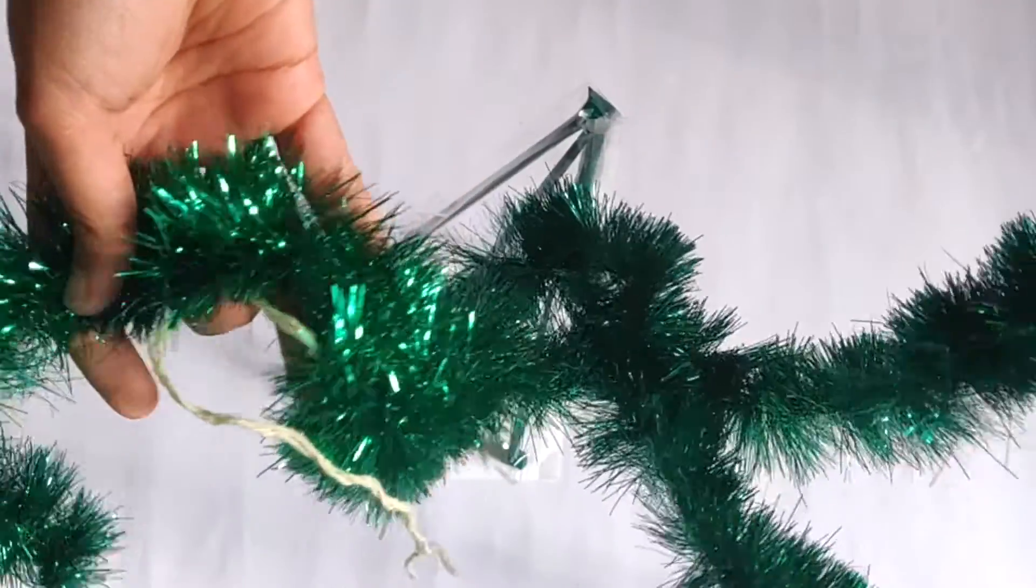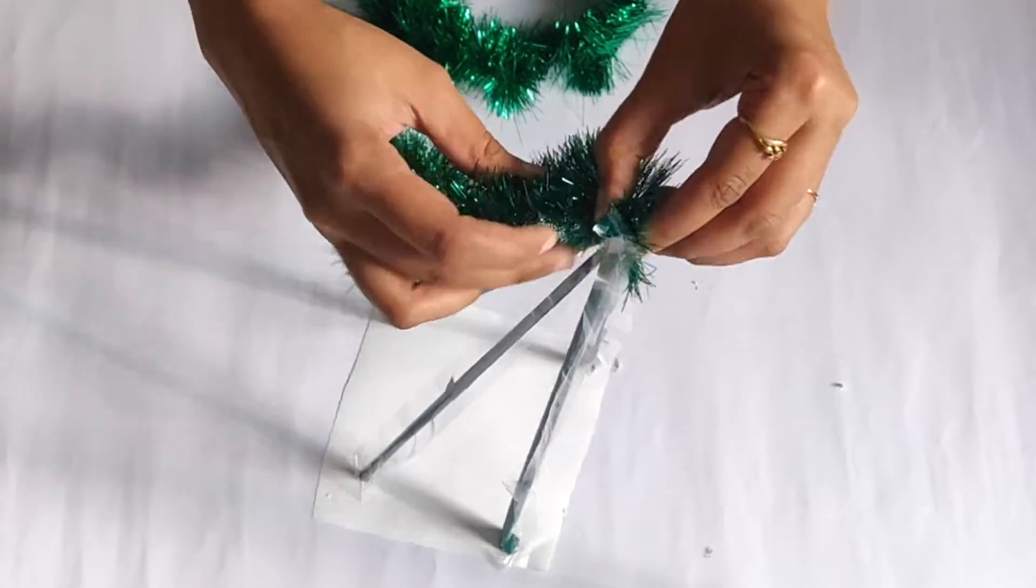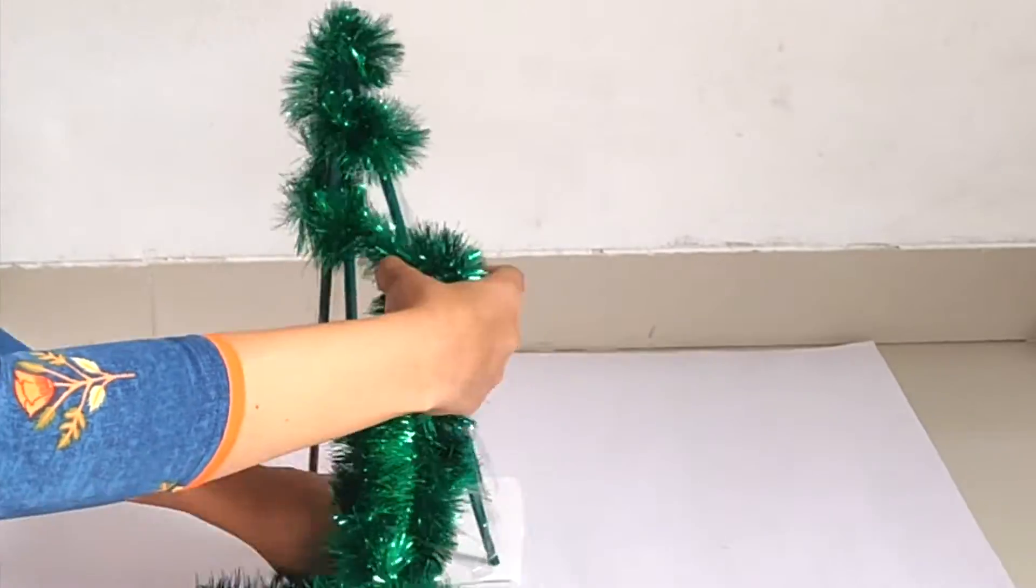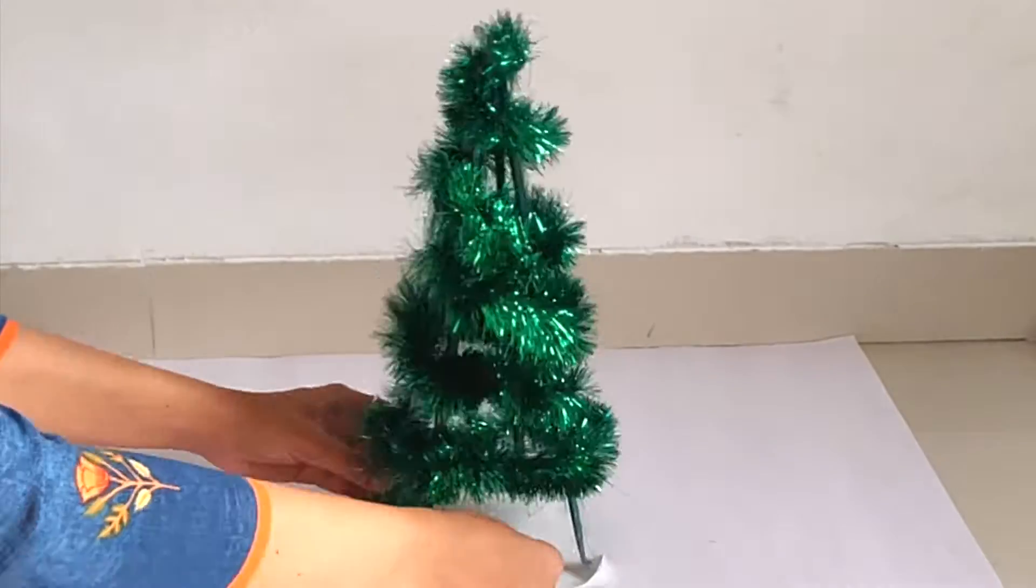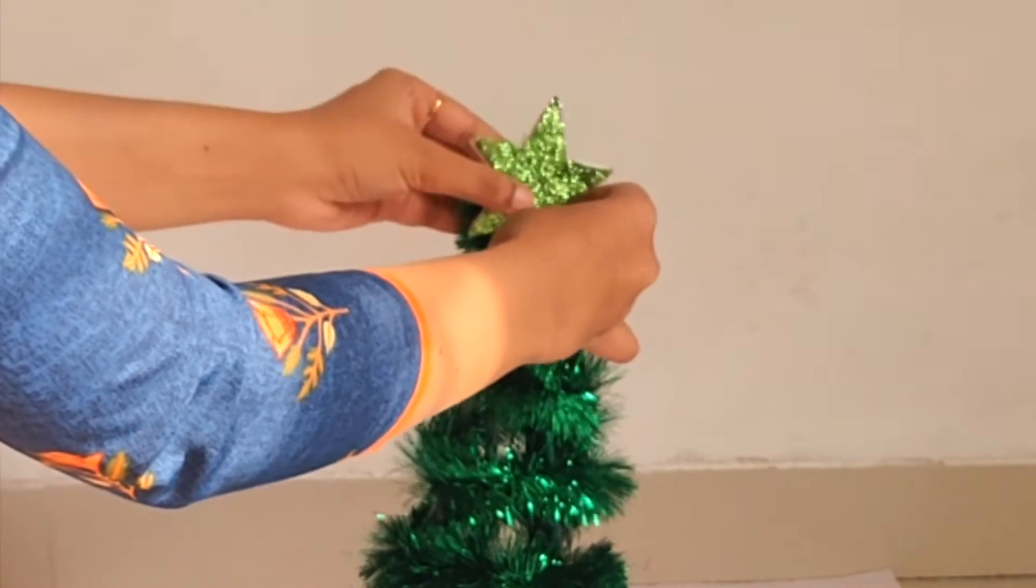Then I took this green shiny garland which you can easily get at any stationery shop. I started wrapping the garland around the base structure like this and this garland will properly stick to the pipe because of the tape. And then added a glittery star at the top of the tree.